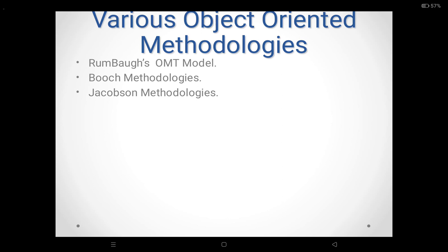Object modeling technique is a methodology of object-oriented analysis, design and implementation that focuses on creating a model of objects from the real world and then using this model to develop object-oriented software. Object modeling technique is one of the object-oriented methodologies; Booch methodology and Jacobson methodology are the others. These three are various object-oriented methodologies. Now we are going to discuss only object modeling technique.